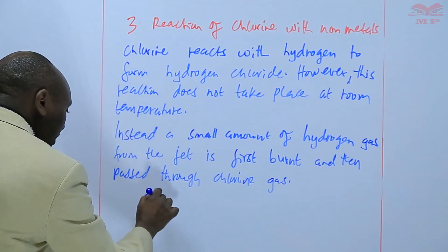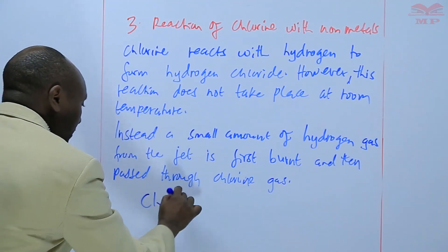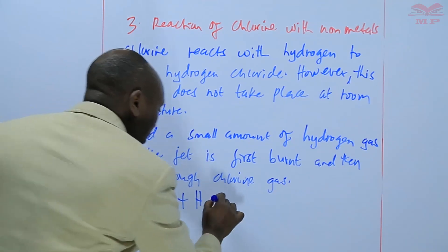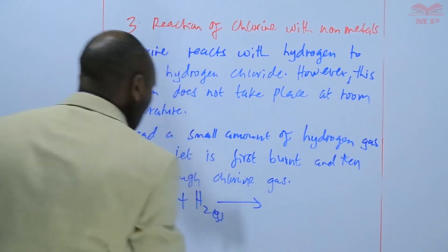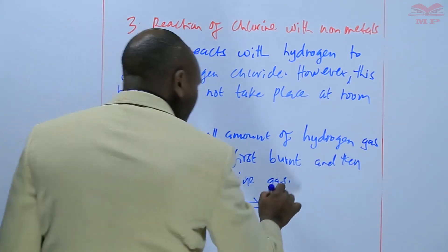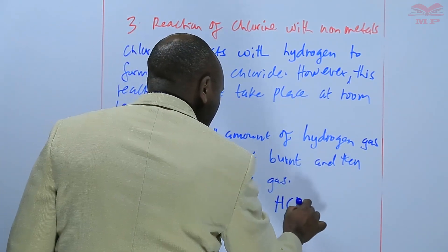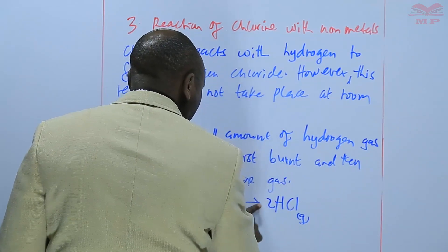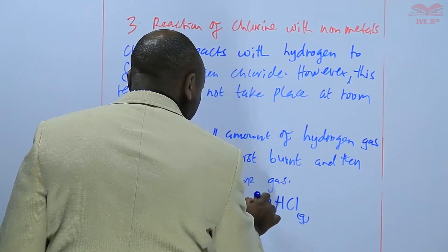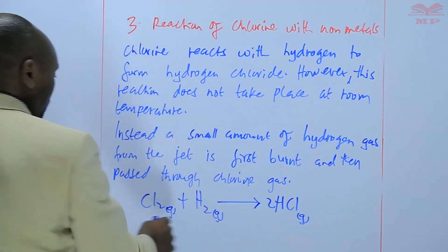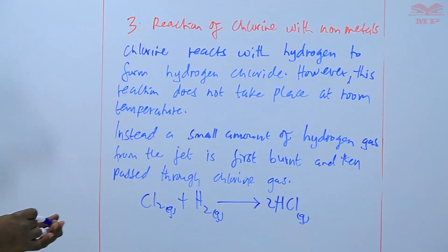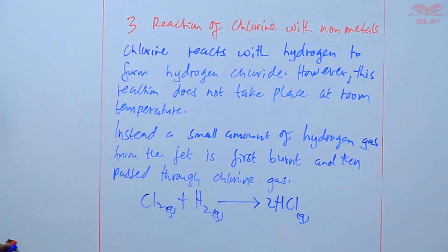Chlorine gas plus hydrogen reacts to form hydrogen chloride gas, which is a colorless gas.